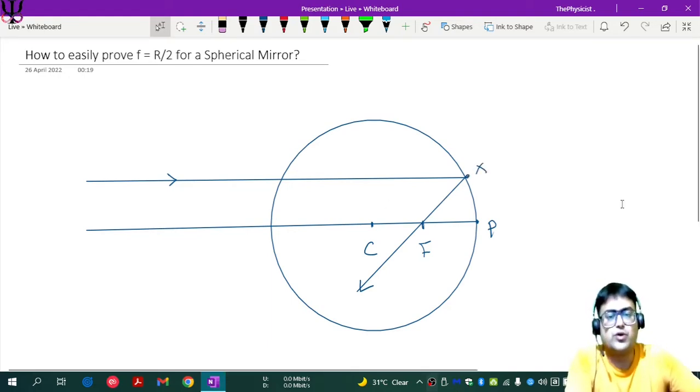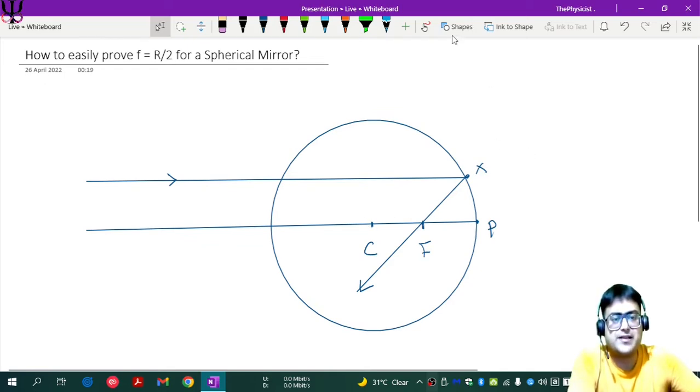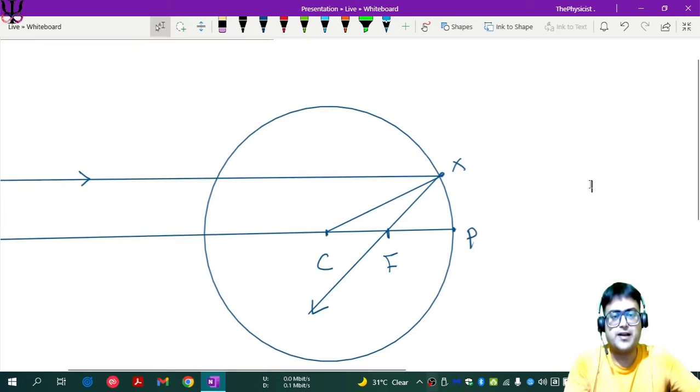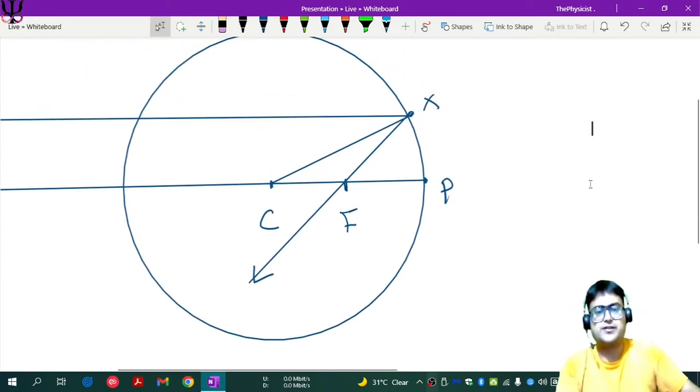Now what I'm going to do, I'm going to join the center C with X. So let's again do that, let me join a line like this. And let me fix it to the center. So now let me enlarge this, so that we can all see it properly.